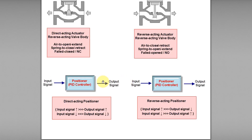As for the positioner, a direct acting positioner is one where if the input signal increases, the output signal produced by the positioner also increases, and if the input decreases, the output decreases as well. A reverse acting positioner is one where if the input signal increases, the output signal is reduced, or vice versa.